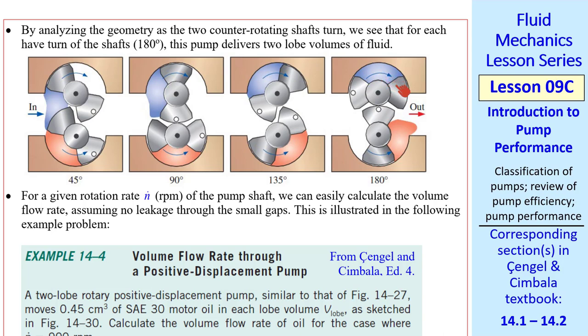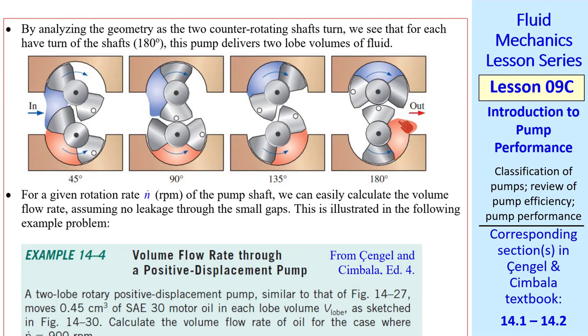As this shaft spins this way, it draws the blue water into this lobe and then continues around. And it stops at the top at 180 degrees. Meanwhile, the pink fluid has already been drawn in. And as this spins counterclockwise, it pushes that volume out. You can see that this volume is the next one to be pushed out. In this manner, it pushes out some red fluid and some blue fluid and some more red fluid coming from here. For a given rotation rate, which we call n dot in RPM of the pump shaft, we can calculate the volume flow rate assuming there's no leakage through these small gaps. We illustrate this in the following example problem from our textbook.